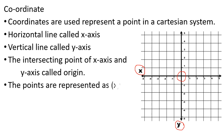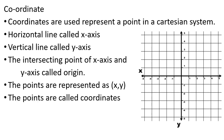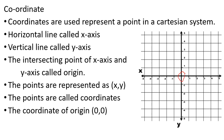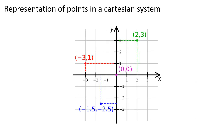The intersecting point of the x-axis and y-axis is called the origin. The points are represented as (x, y) in the Cartesian system. The x-axis has values 1, 2, 3, 4, 5. The points are called coordinates. The coordinate of the origin is (0, 0).